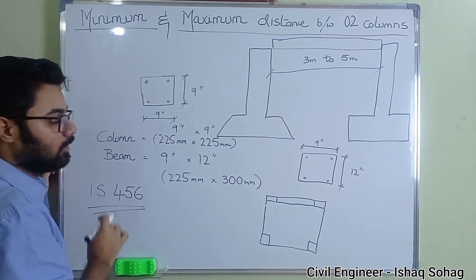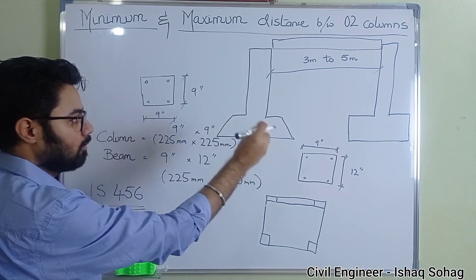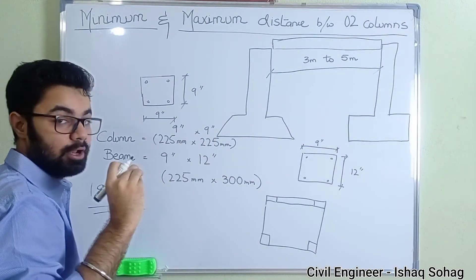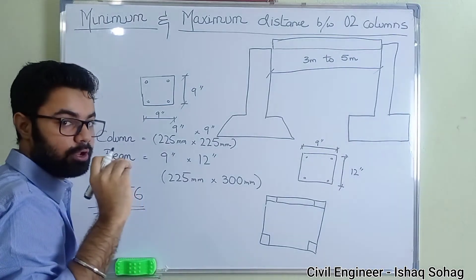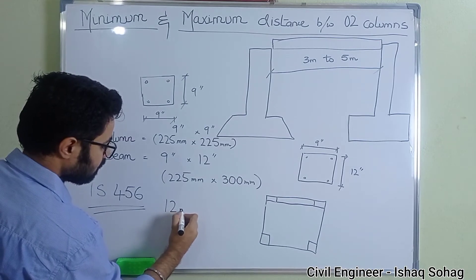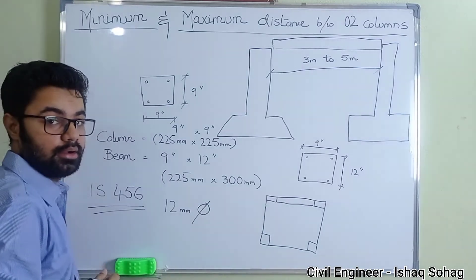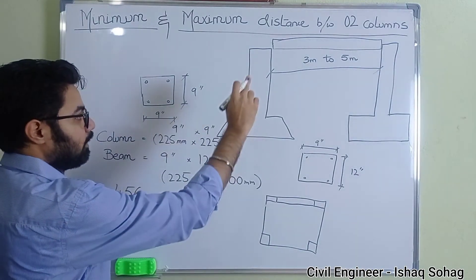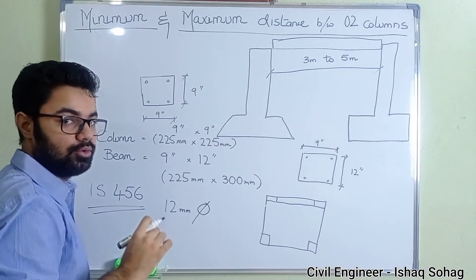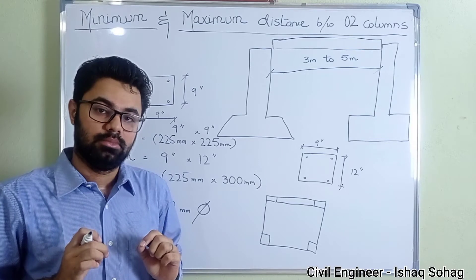It has been mentioned in the code that whenever we are designing a house and we are having this construction of column or beam, we always have to use the diameter of reinforcement as 12 millimeter at least, at least 12 millimeter dia has to be used. That should be the diameter for beams and for the columns. For both of them we have to use 12 millimeter dia and for the stirrups we can use 8 millimeter.